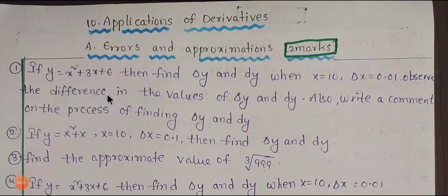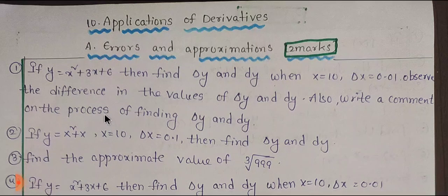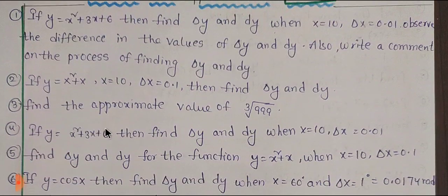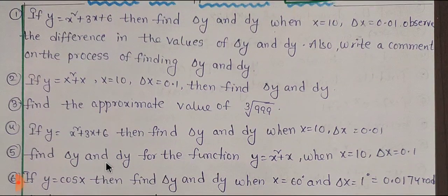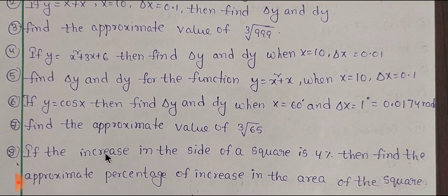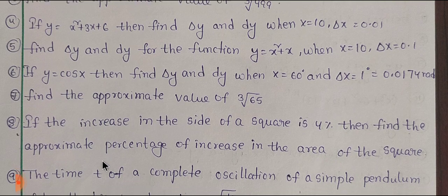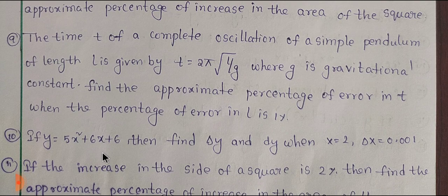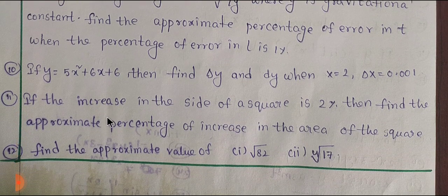The next topic is errors and approximations in the application of derivatives. This unit is only 2 marks — it is a 2-mark problem. The problems in this section are numbered 8, 9, 10, 11, and 12 marks.